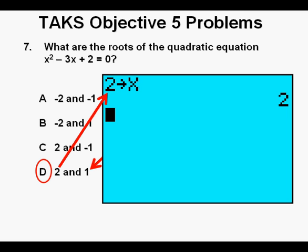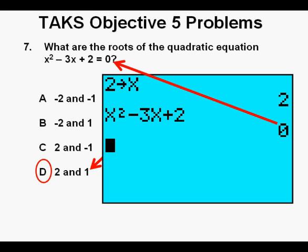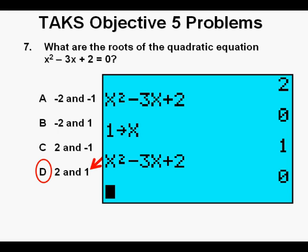We can also use the calculator to check our answer. We store 2 for x by pressing 2, then STO for storage, then x, then enter. Then we enter the left side of the equation, x squared minus 3x plus 2, press enter. And we get zero, proving that 2 is a root or solution to this equation. And we go through the same process to test the other solution for d, which is 1, and this is what it looks like. And with an input of 1, this one also equals zero, verifying d is our correct answer. Again, both answers need to be verified as correct.